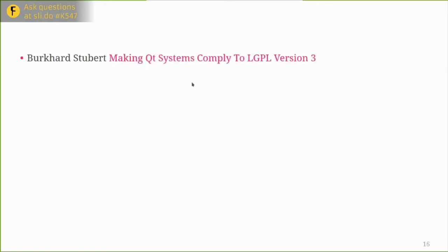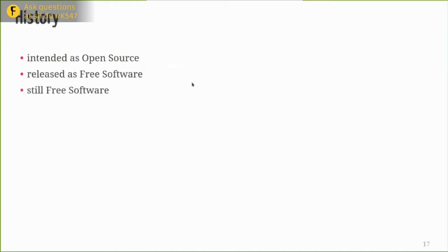There's a really good talk by Burkhardt Stubert on making sure your systems comply with LGPL version 3 when using Qt — it's on YouTube. So, returning to history: Qt was originally intended to be released as open source, it got screwed up, then it was released as free software, and it's still free software. It's important to note that Qt has been around more than 20 years and it's still free software.